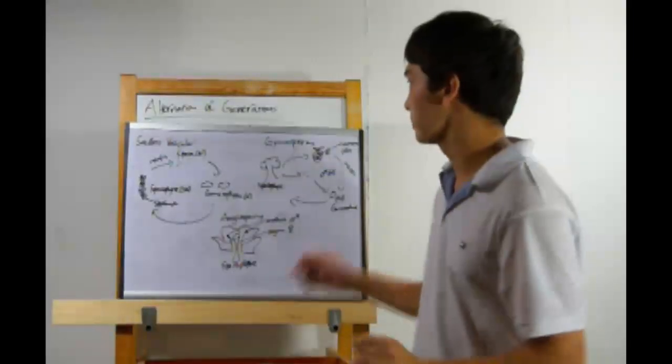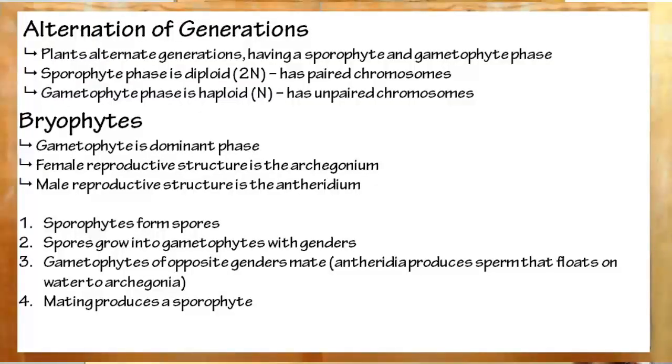To recap: Plants alternate between a haploid phase and a diploid phase. The diploid phase has pairs of chromosomes and is known as a sporophyte. The haploid phase has unpaired chromosomes and is known as the gametophyte.